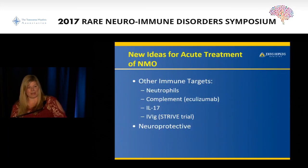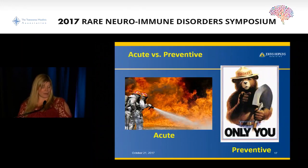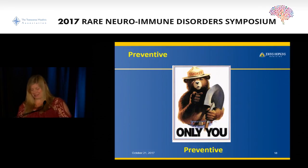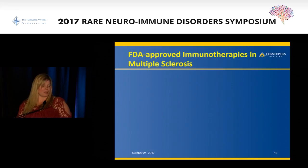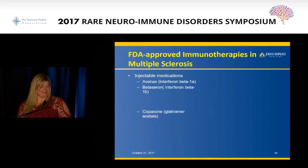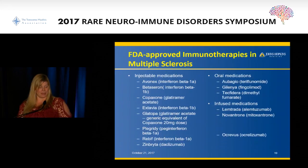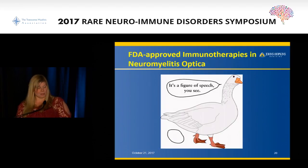There are lots of new ideas on the horizon, including neuroprotection, which someone will be talking about later. This moves us into preventative treatment. Here is a list of all the FDA-approved treatments for multiple sclerosis - it wasn't that long ago that this list was empty. And here's the list of NMO treatments that are approved: there are none. Goose egg.